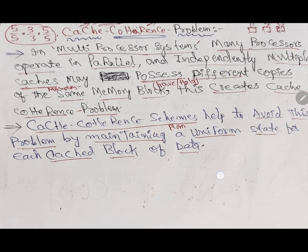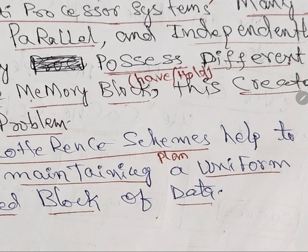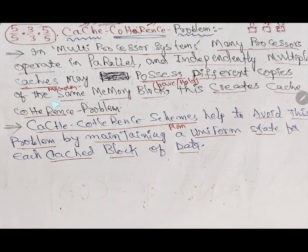Now we will see the cache coherence problem — what is the problem we will get when we have many processors with many cache memories, each containing separate data. When the data is not equal, not identical, that is the problem, and we will get wrong data. In multiple processor systems, many processors operate in parallel, independently. Multiple caches may possess different copies of the same memory block — this creates the cache coherence problem.